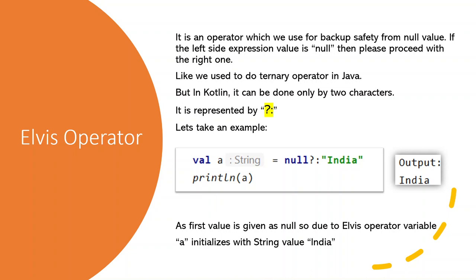It is like a backup safety from null value. If the left side value of the operator is null, then please assign the right side value to the variable. It is same as ternary operator in Java.